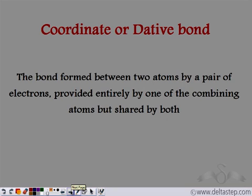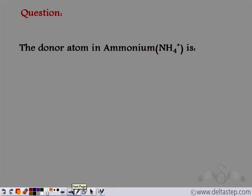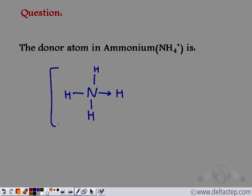So a coordinate or dative bond is formed between two atoms by a pair of electrons in which the pair of electrons is provided by only one atom and shared by both. So whenever we have a pair of electrons which is provided by only one atom but shared by two atoms, such a bond formation is known as a coordinate or dative bond. The donor atom in ammonium ion — nitrogen has a lone pair of electrons which it completely shares with the hydrogen ion, which was short of a lone pair of electrons. Since nitrogen is completely sharing its lone pair of electrons with hydrogen, nitrogen atom is the donor. So in ammonium ion, the donor is nitrogen atom.